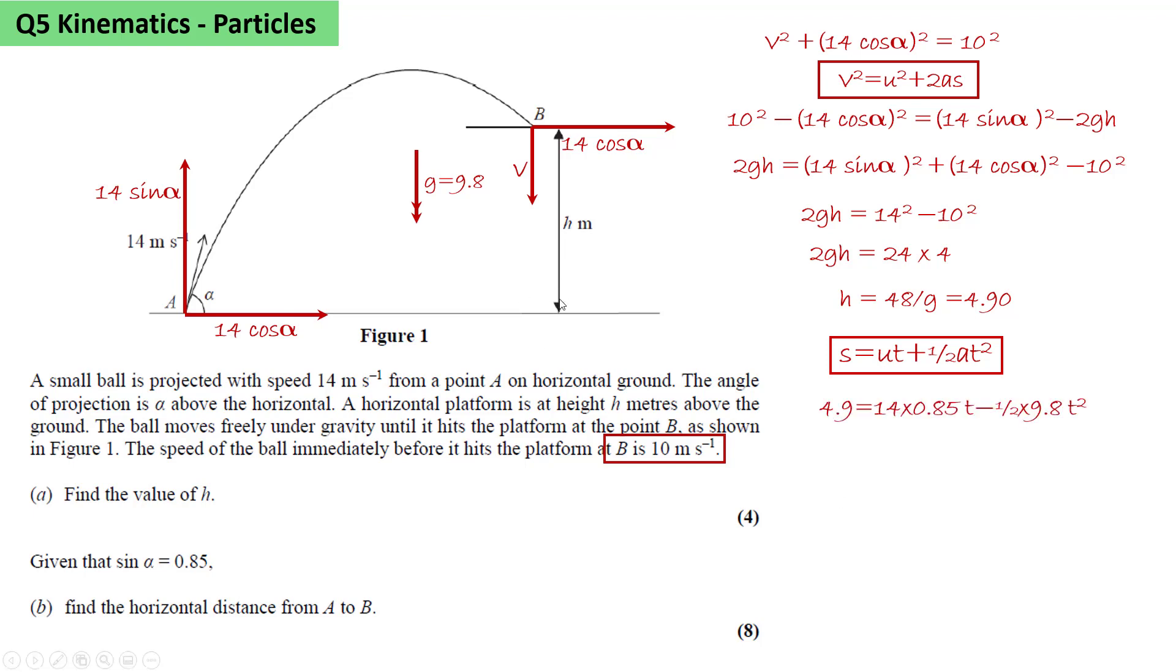So here we know the height is 4.9. That's the displacement. S equals UT, so it's 14 sin alpha. And we're told sin alpha is 0.85 times T. Acceleration minus G or minus 9.8, so it's minus a half 9.8 times T squared.